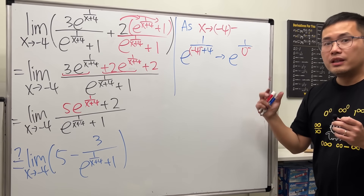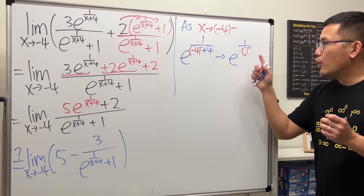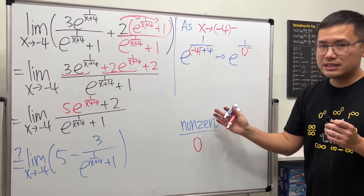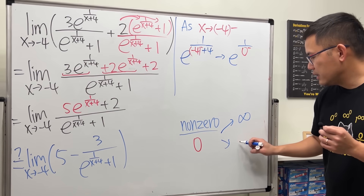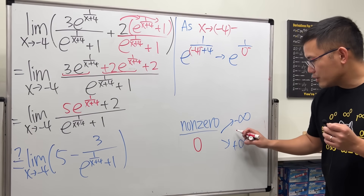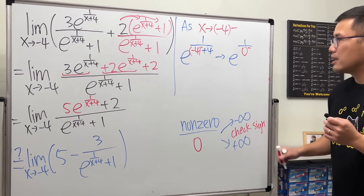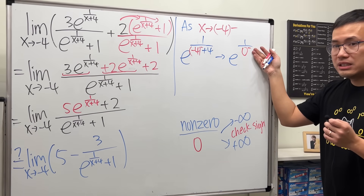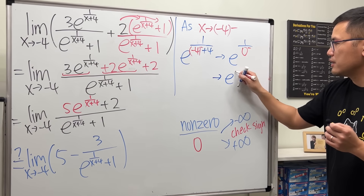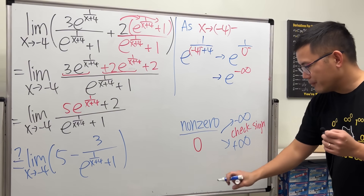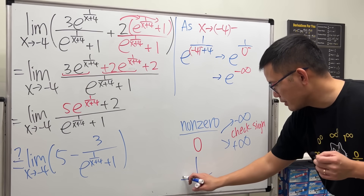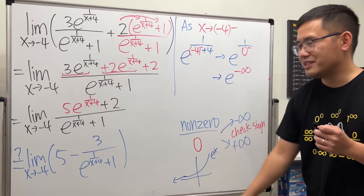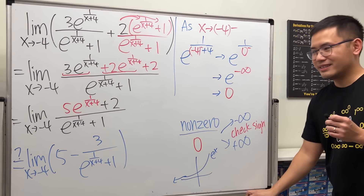Once we have one over zero minus, we can draw a conclusion: a non-zero number divided by zero in a limit gives infinity or negative infinity — we just check the signs. One is positive and zero minus is negative, so one divided by zero minus is negative infinity. Therefore we have e to the negative infinity. For the exponential function, e to the negative infinity means looking all the way to the left — the y-value approaches zero. So this gives us zero.